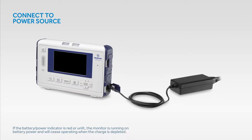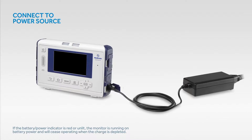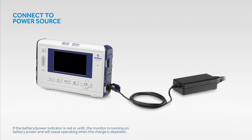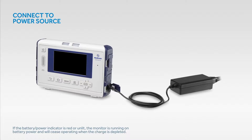To operate the KapnaStream 35 Portable Respiratory Monitor, connect the AC adapter to the 12-volt DC port on the monitor's right panel, attach the power cord to the AC adapter, and plug the cord into an external power source. The battery power indicator on the front of the monitor indicates the battery and power status.